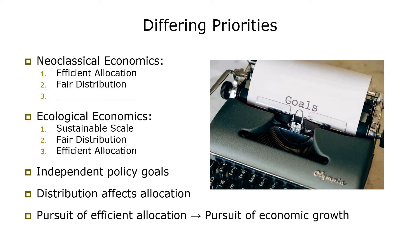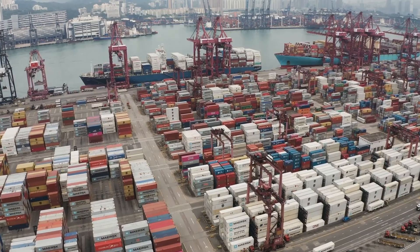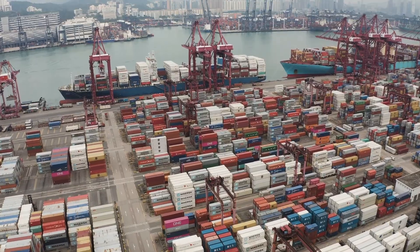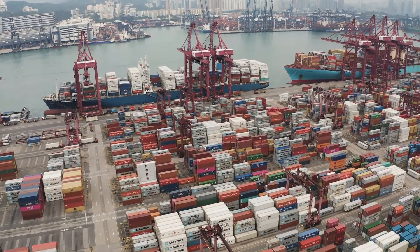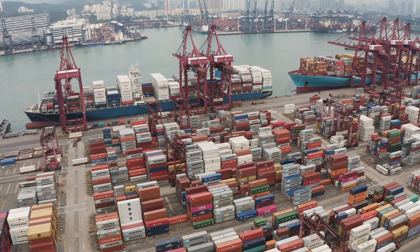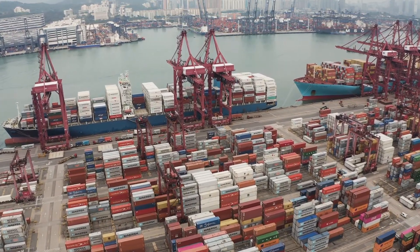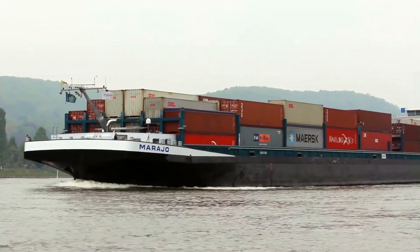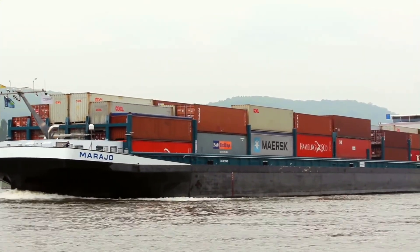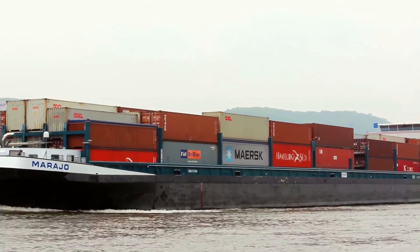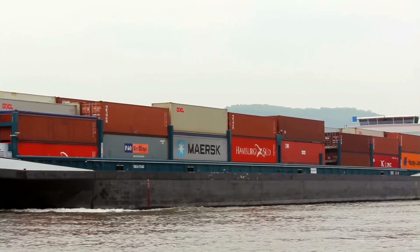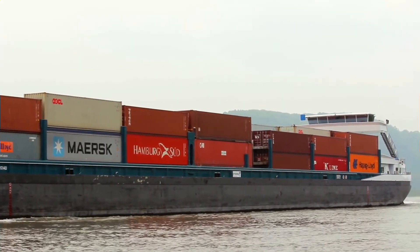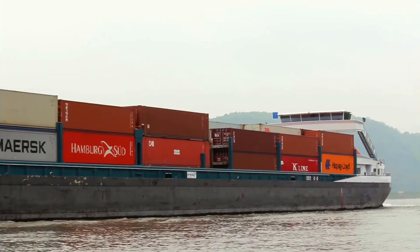Herman Daly often uses the example of loading a ship to help clarify the difference between allocation and scale. If you're loading a ship, you have to ensure that the cargo is balanced so that the ship doesn't tip over — this is a problem of allocation. However, regardless of how nicely you arrange things on board, you also have to ensure that you don't put too many crates on the ship, otherwise it'll sink — and this is a problem of scale. The more you put on a ship, the deeper it sits in the water, and for this reason ships have a painted line on the hull — the Plimsoll line — showing the limit to which the ship can be loaded. Planetary boundaries may provide us with a Plimsoll line for the Earth.